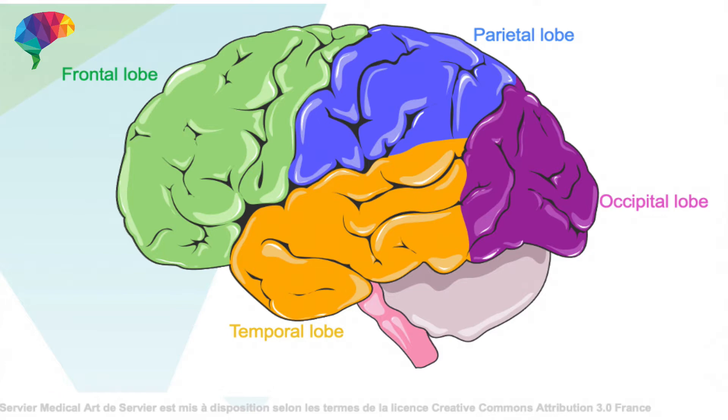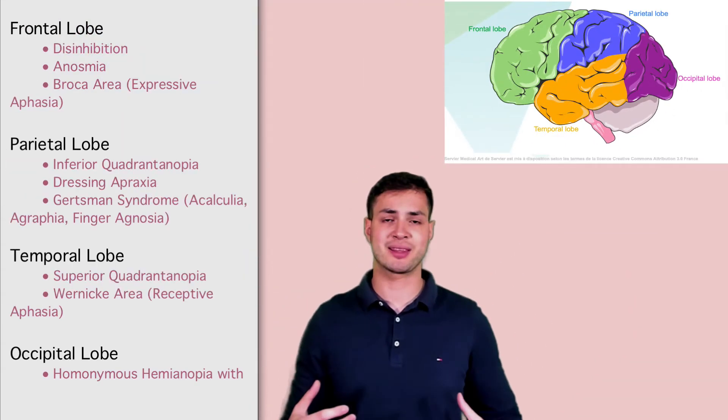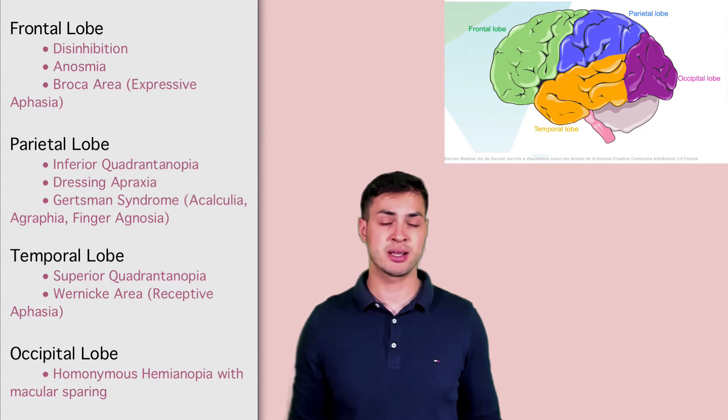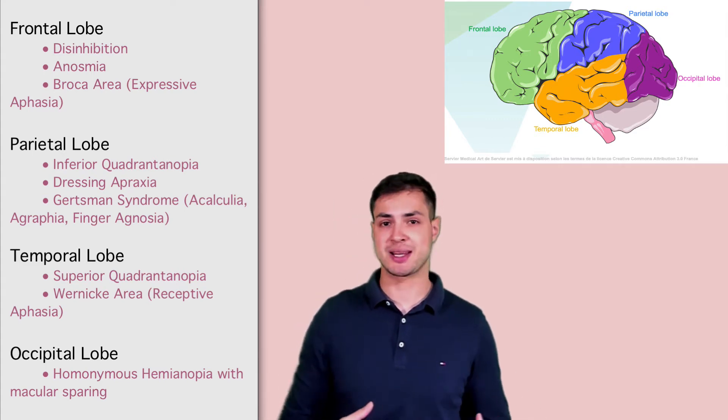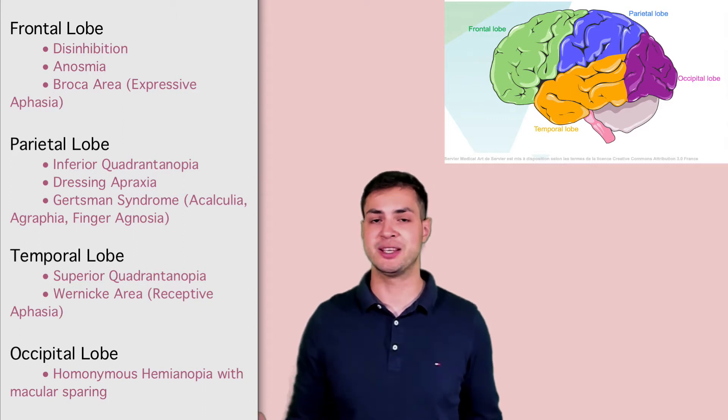So let's start with the frontal lobe. It's right at the front, obviously, right here. Now when affected by a stroke or when someone maybe is drunk, you get something called disinhibition. So people start to do things that they would not usually do. This is characteristic of a frontal lobe lesion.